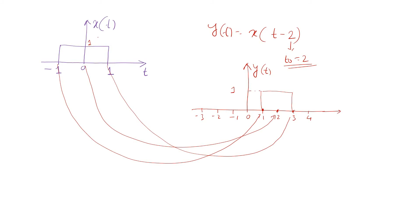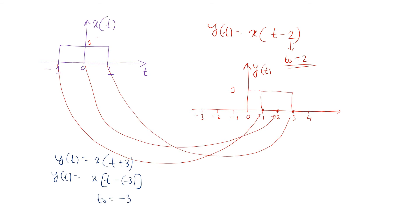Now we will take another example. Let y(t) = x(t + 3). So in this case, y(t) = x(t − (−3)). So the value of t₀ is minus 3. If t₀ value is less than 0, then the signal x(t) will shift towards the left. Here y(t) = x(t + 3) is the same as x(t), but shifted by 3 units towards the left.